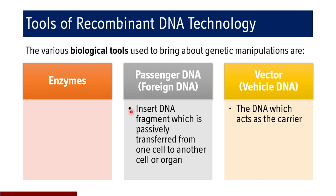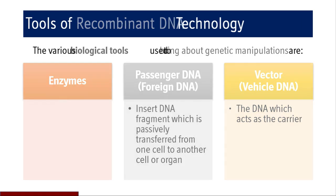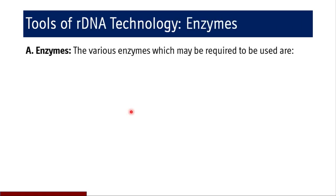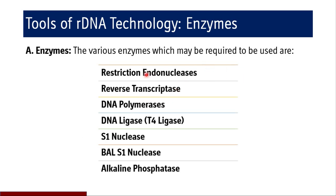Coming to the enzymes used as tools of recombinant DNA technology, various enzymes may be required: restriction endonucleases, reverse transcriptases, DNA polymerases, DNA ligases, S1 nuclease, BAL S1 nuclease, and alkaline phosphatase. Restriction endonucleases are used to cut DNA chains at specific locations, which is why they are called chemical knives — they are very specific in their activity.